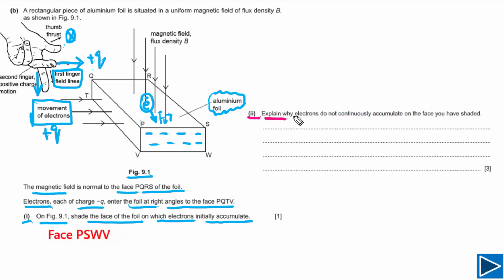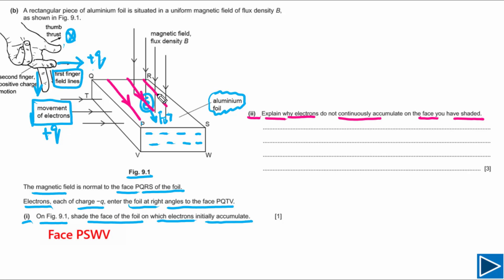For part B2, we need to explain why electrons do not continuously accumulate on the shaded face. At the beginning electrons accumulate on face PSWV, but this happens for only a short period. After that, electrons continue moving in a straight line. When this side becomes more negative, an electric field is set up between the two faces.